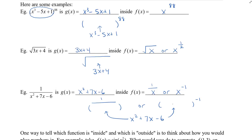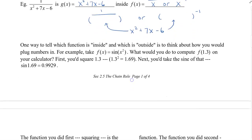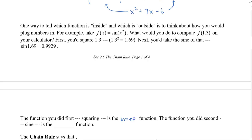One way to tell which function is inside and which is outside is to think about how you would plug numbers in. For example, take f of x equals sine of x squared. What would you do to compute f of 1.3 on your calculator? You would take 1.3, square it first because we do exponents first, getting 1.69, and then take the sine of that, giving 0.9929. So the function we did first — the squaring part — is the inner function, and the function we did second — the sine part — is the outer function.